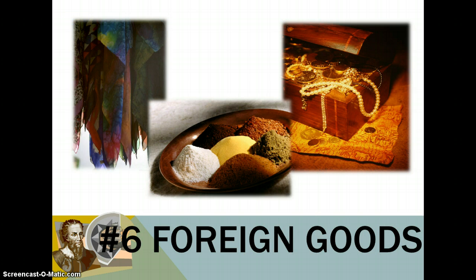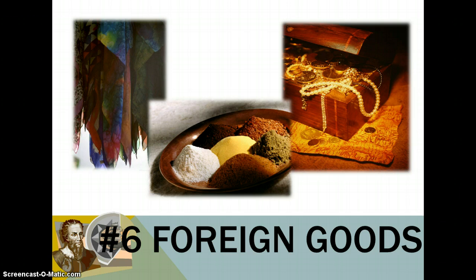The sixth motive is foreign goods. If you look at the pictures, there's silk, jewels, gold, and spices. Foreign goods are things they could acquire in a different place and bring back to sell. These new places had goods that became huge commodities for the European nations — especially silk, spices, and gold. They were looking not only for gold itself but also for jewels, silks, and other things they could sell back in Europe.